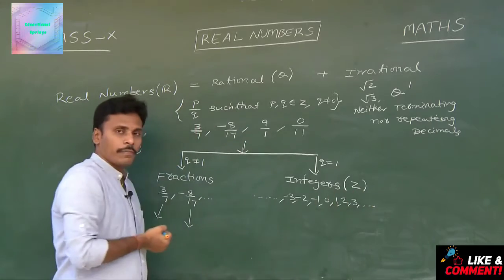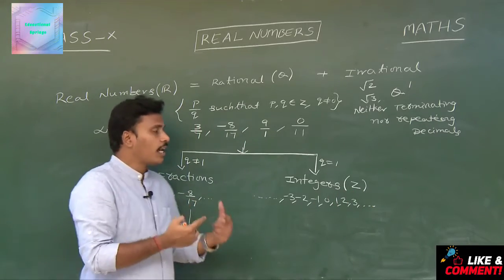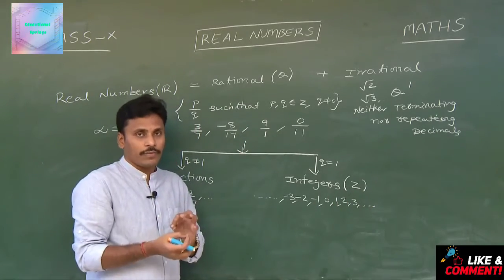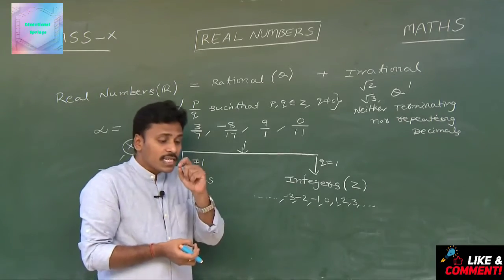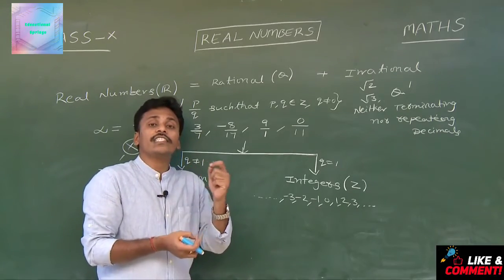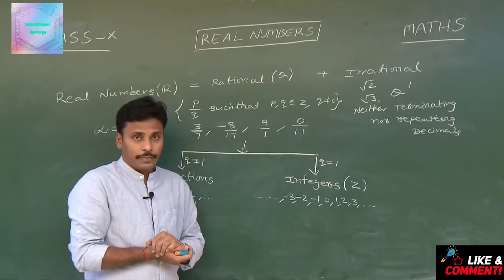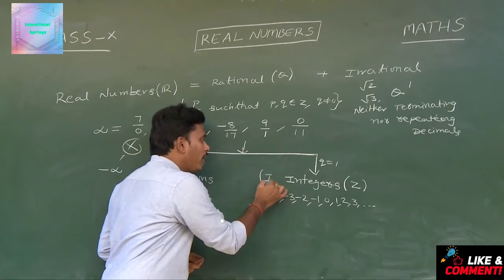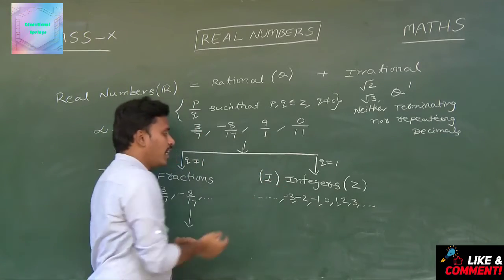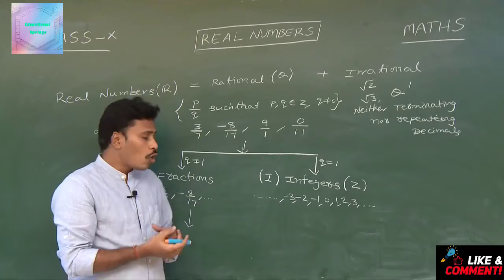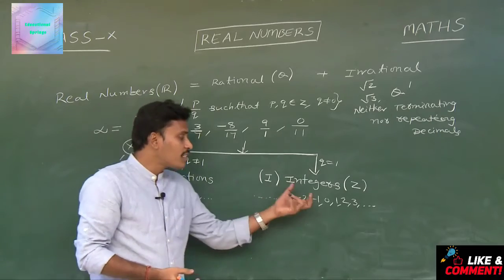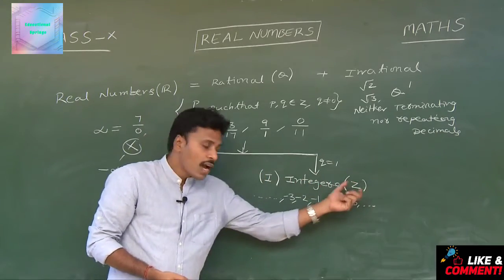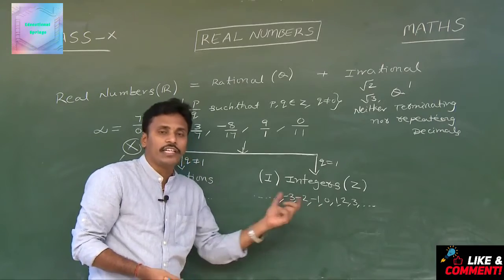In some cases, some people may denote integers by the symbol I. So integers are denoted by either I or Z. This is the collection of integers.